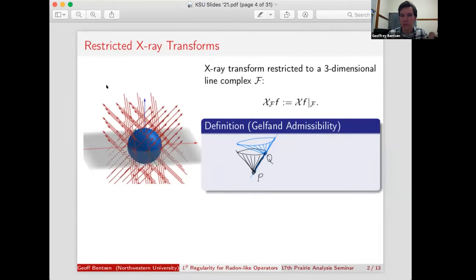This problem was studied by Gelfand and Graev in the 60s and 70s in the complex case, and then in the real setting by Greenleaf and Uhlmann in the 80s and early 90s. They came up with a condition that characterized which line complexes admitted inversions, and it's called Gelfand admissibility.